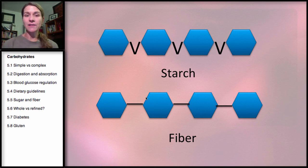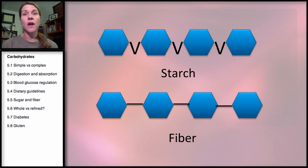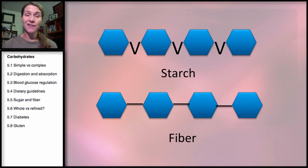Even though fiber is also a chain of glucose, it has a bond that we cannot break down. Our enzymes cannot digest it in our intestines, so fiber goes through our intestines undigested. Soluble fiber is fermentable and can be digested to some extent by bacteria in our colon, but we do not break down those bonds and absorb the glucose units. Fiber still has a lot of health benefits, which we'll get to later.